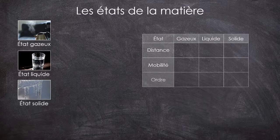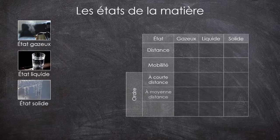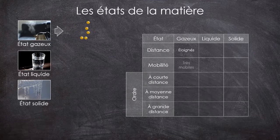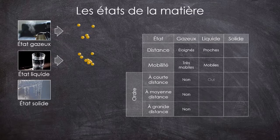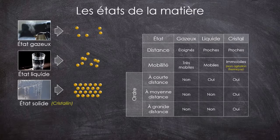Cet ordre peut s'observer sur plusieurs échelles. On le dit à courte distance pour le plus proche voisin, à moyenne distance quand on est à moins d'une dizaine de constituants, et à grande distance au-delà. À l'état gazeux, les constituants sont très éloignés, très mobiles et ne présentent aucun ordre : c'est un état non condensé, désordonné. À l'état liquide, les constituants sont plus proches, bien moins mobiles, et présentent un ordre à courte distance mais rien au-delà : c'est un état condensé, désordonné. À l'état solide, les constituants sont proches, immobiles, et présentent un ordre à toutes les échelles. On parle plus exactement d'état solide cristallin : c'est un état condensé, ordonné.